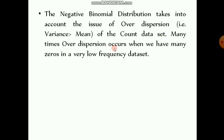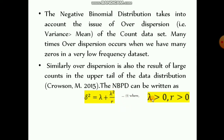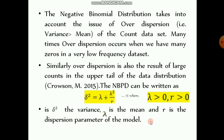The negative binomial distribution takes into account the issue of over-dispersion, that is, variance greater than the mean of the count data set. Over-dispersion often occurs when we have many zeros in a very low frequency data set, or as a result of large counts in the upper tail of the distribution. The negative binomial probability distribution can be written as: delta-squared equals lambda plus lambda-squared over r, where lambda and r are both positive, delta-squared is the variance, lambda is the mean, and r is the dispersion parameter.